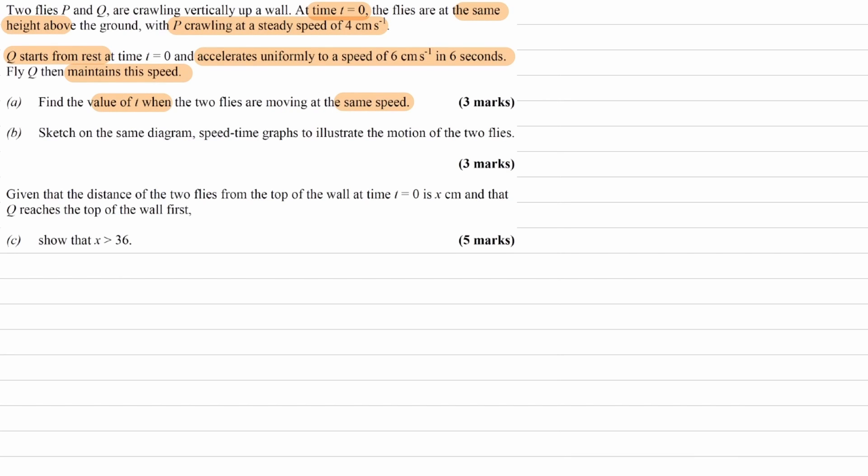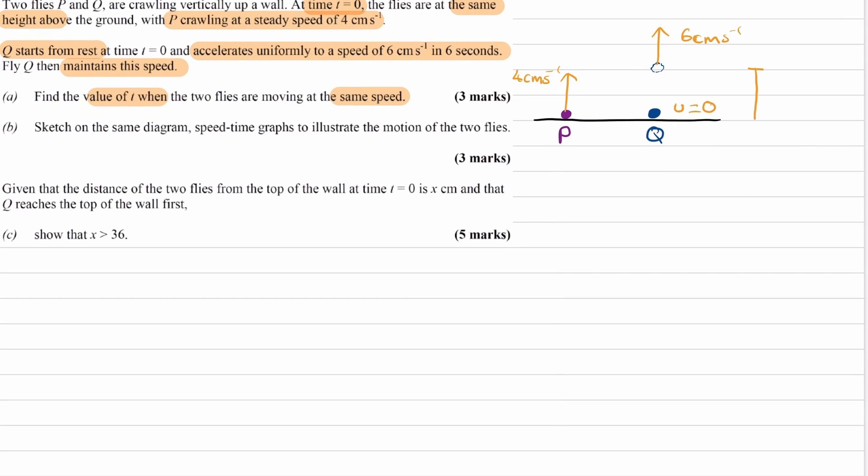So let's draw an image to represent this scenario. So here we have flies P and Q. P is going up at a steady speed of 4 cm per second. And then Q starts with 0 speed. It starts at rest. Eventually, it works its way up to a speed of 6 cm per second. And that takes a time of 6 seconds.